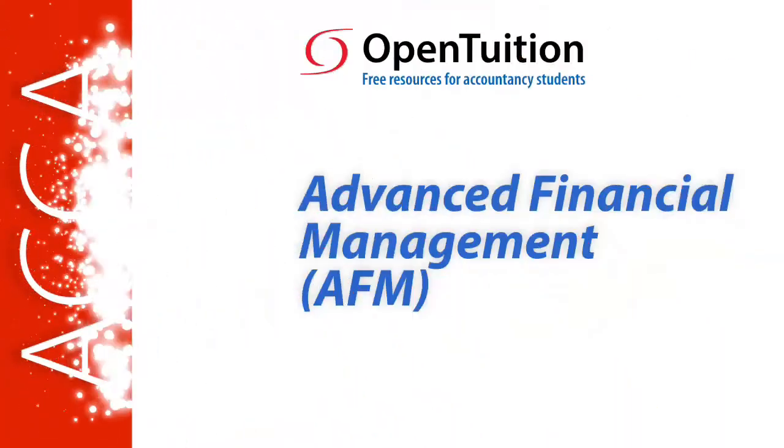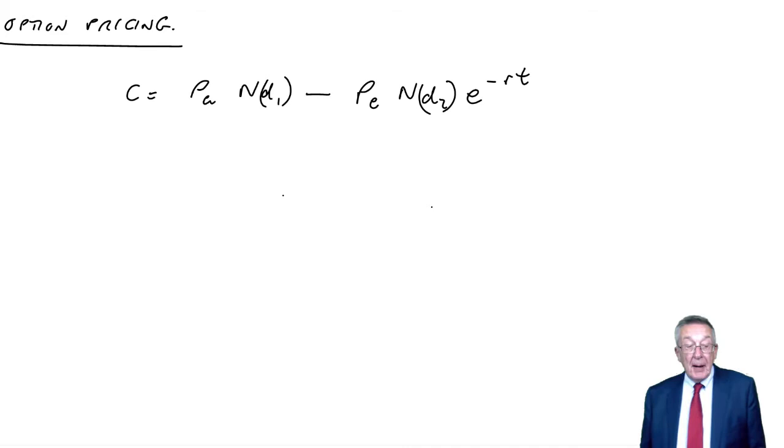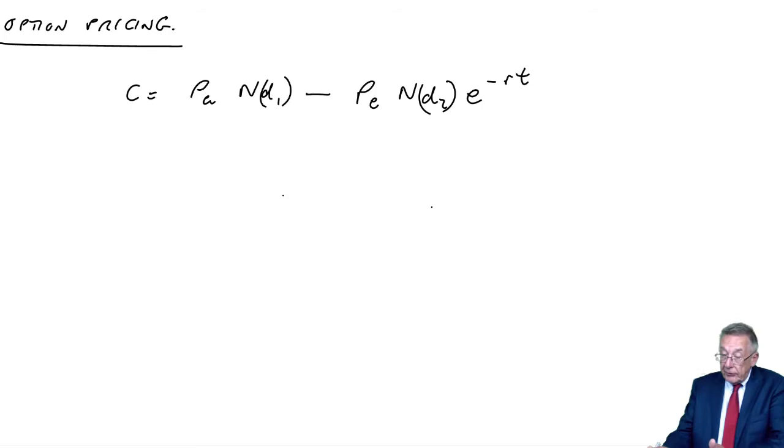This is a lecture from OpenTuition. To benefit from the lecture, you should download the free lecture notes from OpenTuition.com. We're still on the chapter on the Black-Scholes option pricing model, and I've written the formula up again for a call option. We've been through how to calculate the value of a call option. You've got to agree with me, it's really down to calculator efficiency more than anything else.